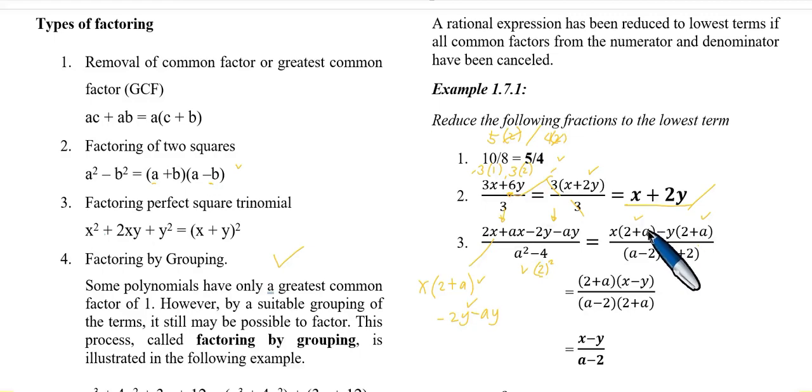Or if you want to first simplify or factor out the numerator, the 2 plus a becomes this. Then you can cancel out. That's it. So the final answer is this.